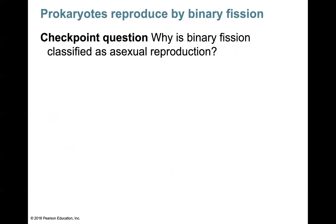Here is a checkpoint question: We say that prokaryotes reproduce by binary fission. So why is binary fission classified as asexual reproduction? Can you respond to that in your notes?